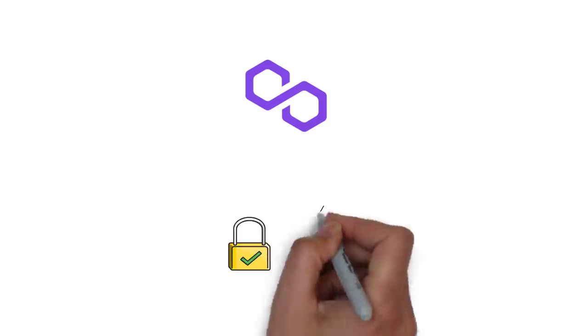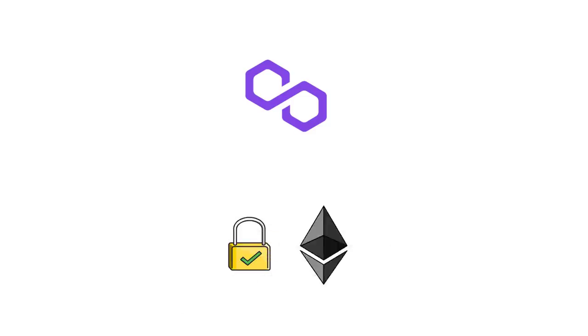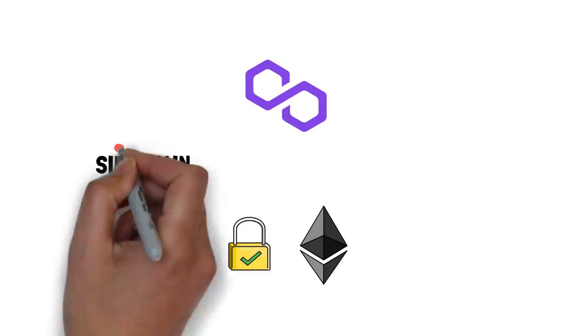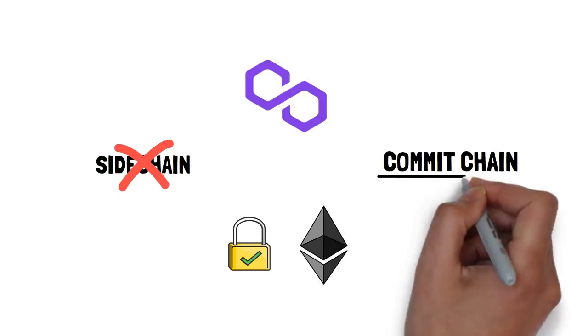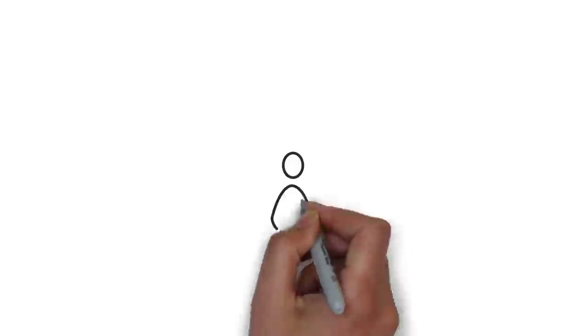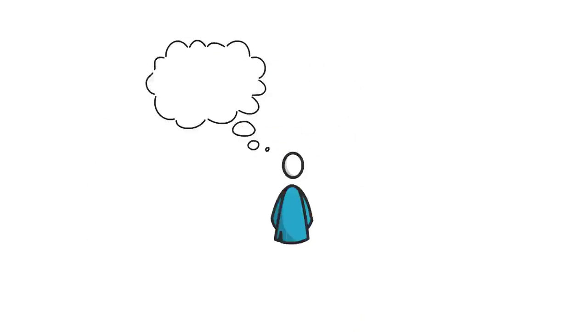As we can see, Polygon POS chain offers a lot of extra security measures based on the Ethereum main chain and is not just a mere sidechain. Perhaps a commit chain is a better name for it. So what do you think about Polygon commit chain? Do you think it's valuable to differentiate it from a sidechain? Comment down below.